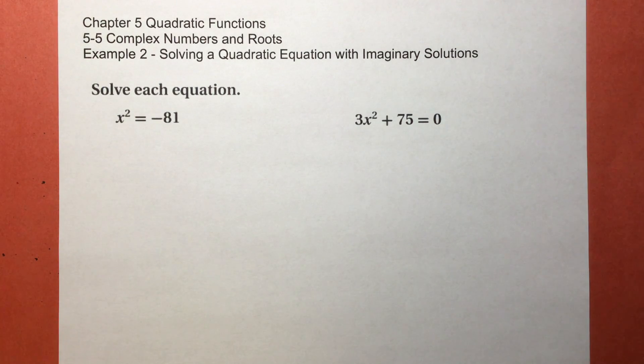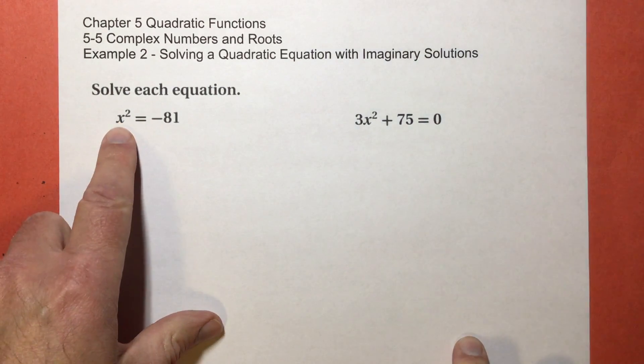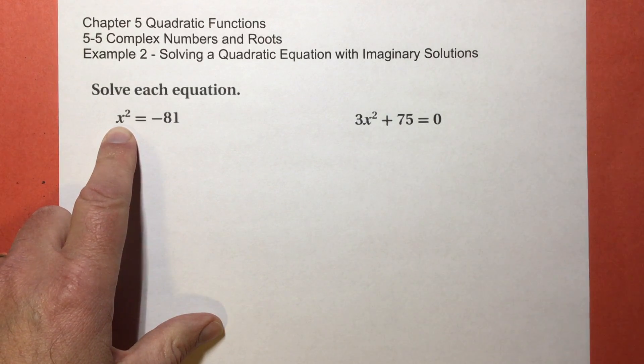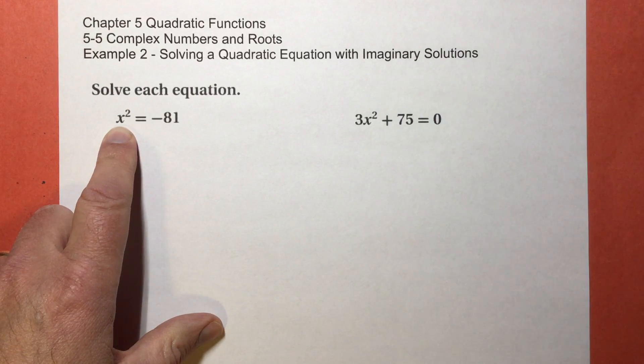So let's talk about the first one: x² = -81. This connects with what I was starting to explain in the first video. This means I have a number that's being multiplied by itself. That number is either gonna be positive, negative, or zero.